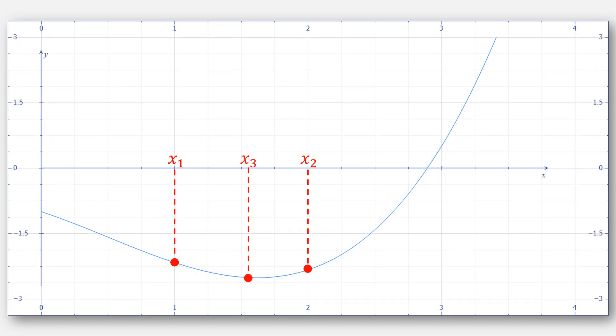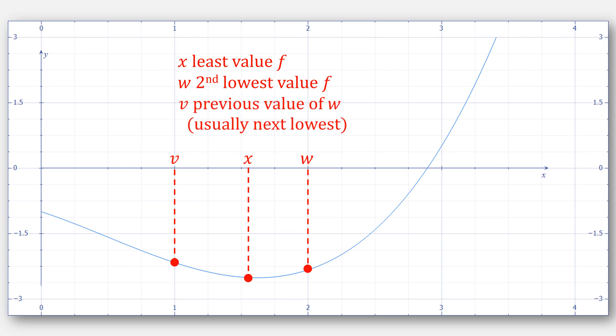What if we instead rename these variables to be v, x, and w? We'll need to define a few rules that say x is our least value of f, w was our second lowest value of f, and v breaks the mold being the previous value of w, but it is usually the next lowest.